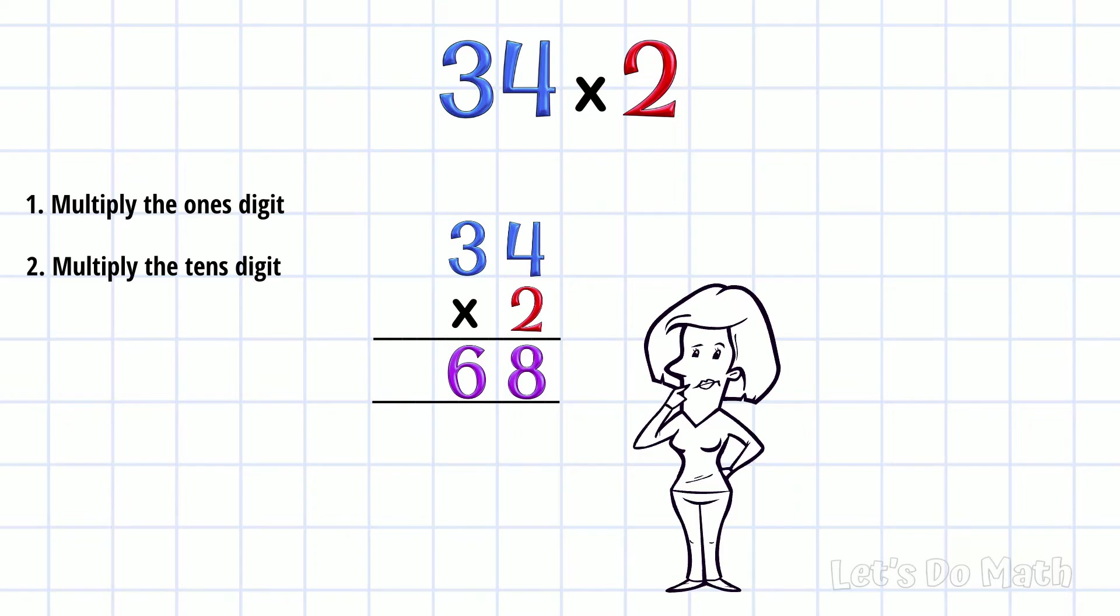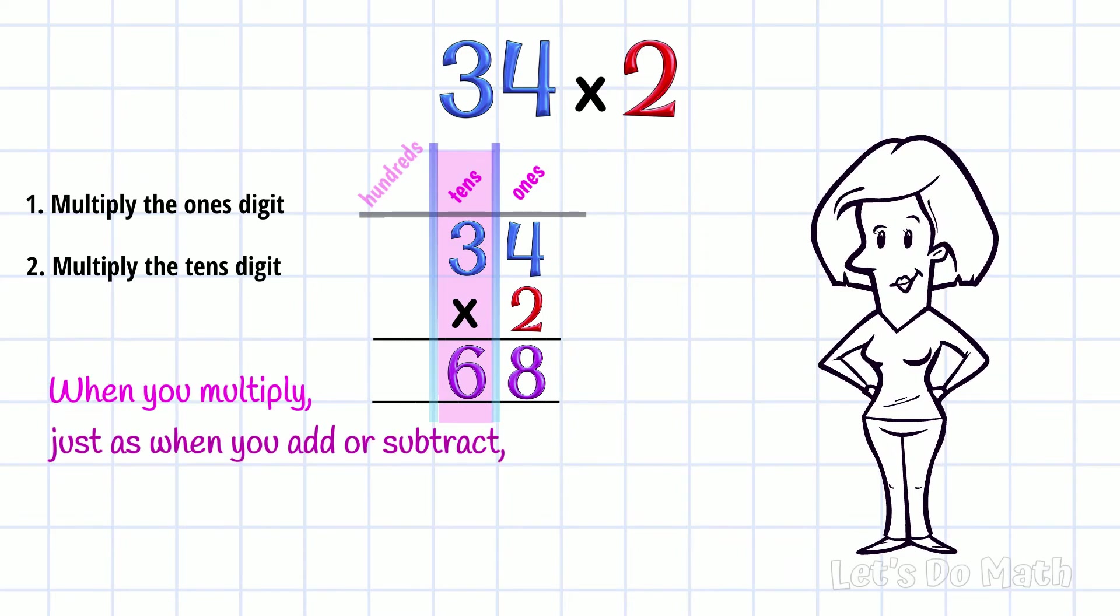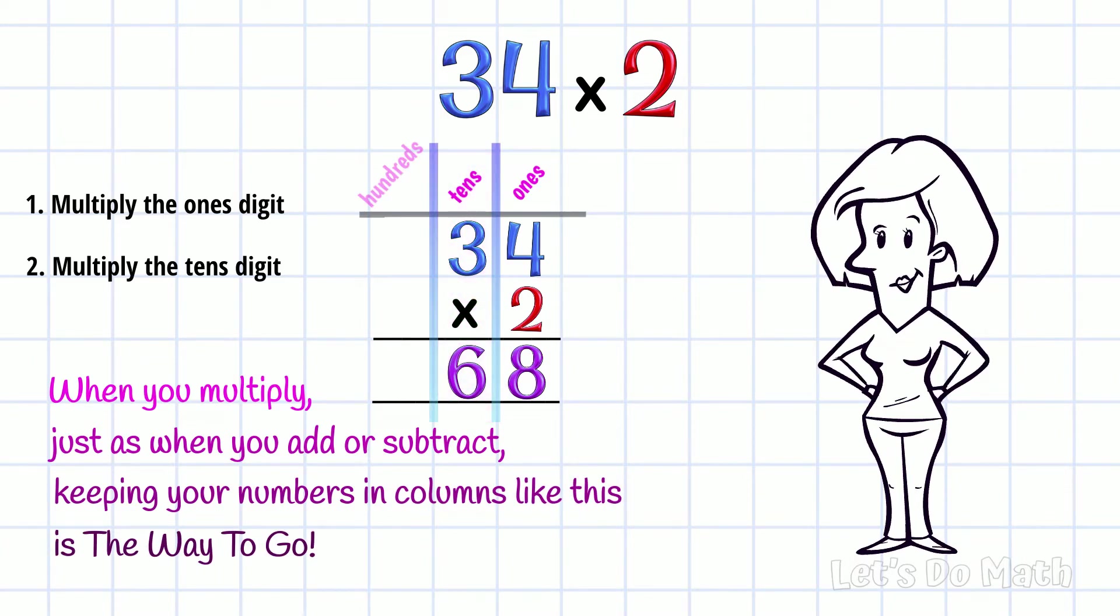Do you see how I kept my numbers in columns? Here's the ones column and the tens column. When you multiply, just as when you add or subtract, keeping your numbers in columns like this is the way to go! That's why I want you to use squared paper.